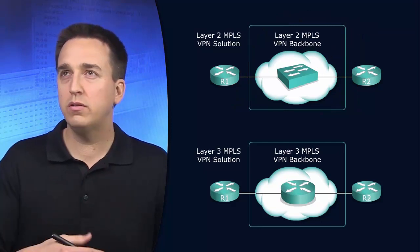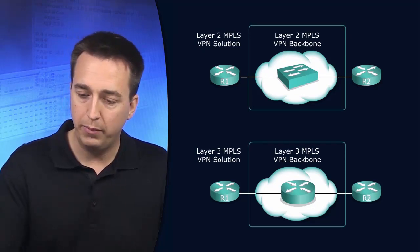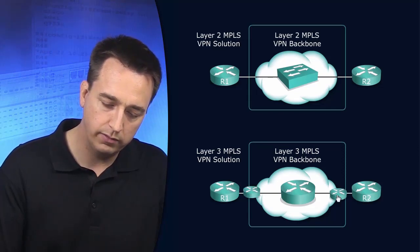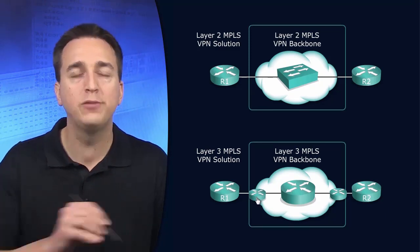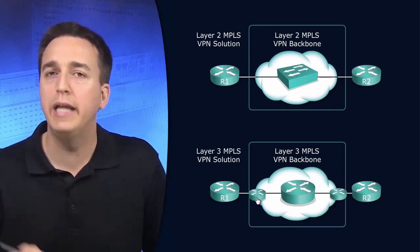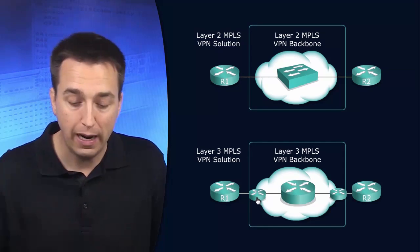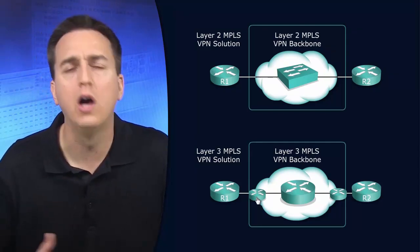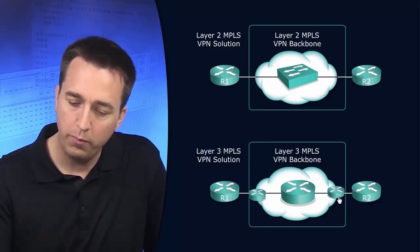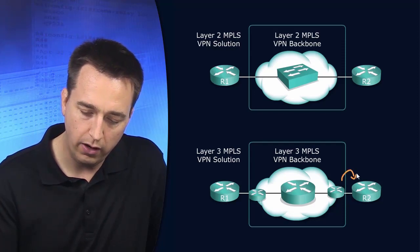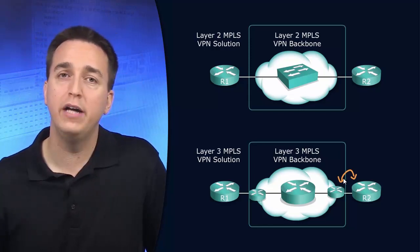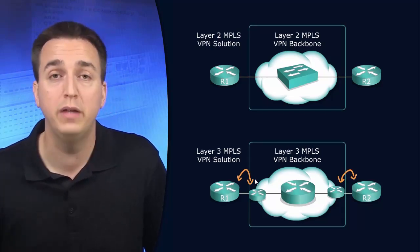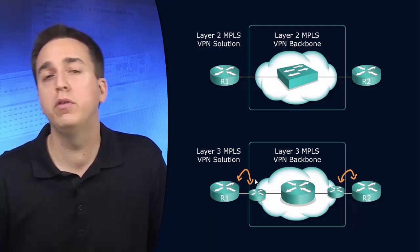The Layer 3 MPLS VPN backbone, which at this point seems to be the most popular option people are choosing, requires us to form neighbor adjacencies with provider edge routers. Why? Because we're dealing with Layer 3 through the MPLS VPN backbone, and when we're dealing with Layer 3 we're dealing with many different subnets — many different Layer 3 networks inside that infrastructure. There could be 50 or 100 of them in between R1 and R2. So we form neighbor adjacencies between our customer edge router R2 and the provider edge router on both ends, because these are completely different subnets. In order to form an EIGRP or OSPF neighbor adjacency, we have to be on the same subnet, so we form the neighbor adjacency with the provider.